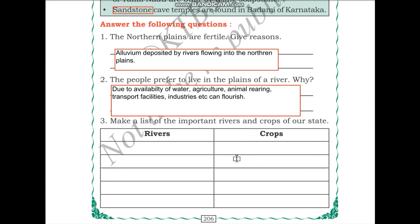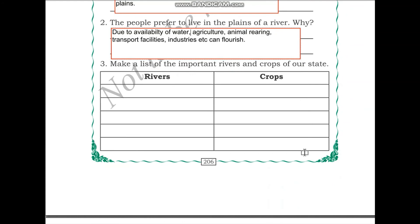Next, make a list of the important rivers and crops in our state. In Karnataka, we need to list the rivers and crops. This is left as an activity - it has been explained in detail in the lesson on agriculture, and a link will be provided in the description box below for reference.